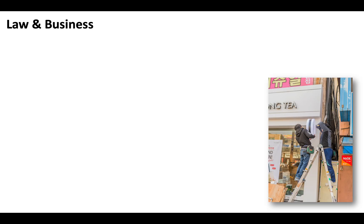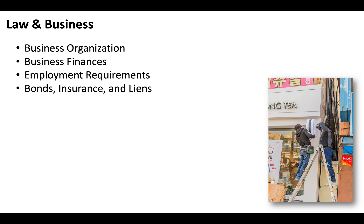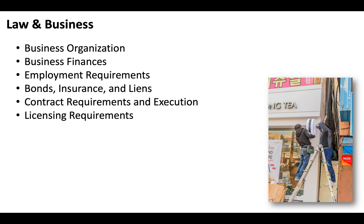As is the case with all California contractor licenses under the C specialty, you'll also have to pass the CSLB Law and Business Exam, and that'll include sections covering business organization, business finances, employment requirements, bonds, insurance, and liens, contract requirements and execution, licensing requirements, public works, and there'll be a section on safety.